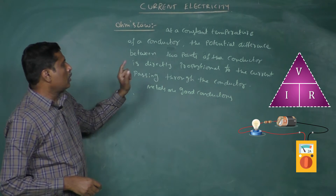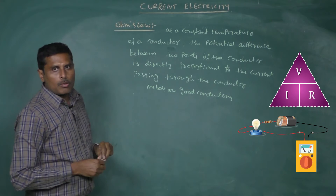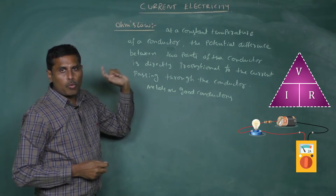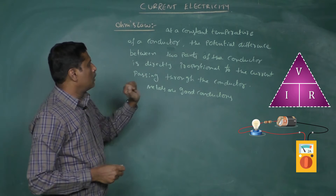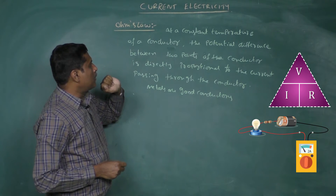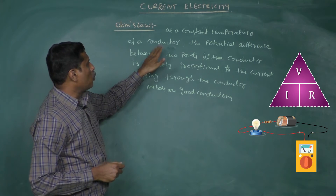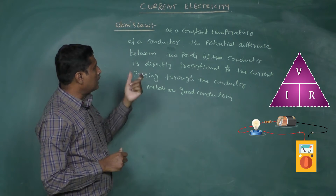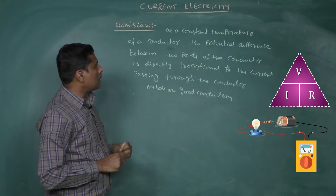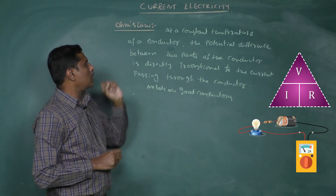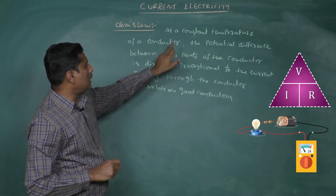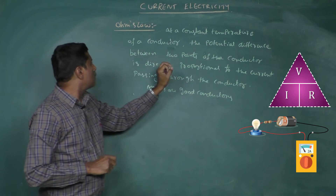Ohm's law — what is meant by Ohm's law? Ohm's law gives the relation between the voltage and the current. If V is the potential difference between the two points of a conductor and I is the current, this law gives the relation between the voltage and the current.